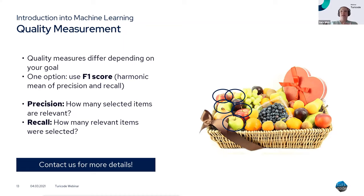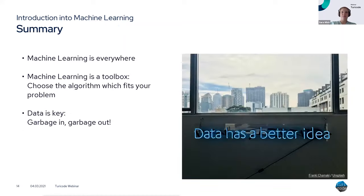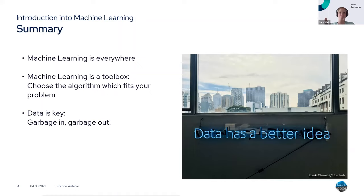Sometimes the use case requires very high precision — what we find must be correct, even if we don't find everything. Sometimes it's okay to find more than you actually want. The quality measure differs depending on your goal. Machine learning is everywhere; it is a toolbox — choose something that fits your problem. Don't try to hammer in a screw: use a screwdriver for the screw and a hammer for the nail. And data is key — garbage in, garbage out. Make sure what you feed into your system is what you want out of it.